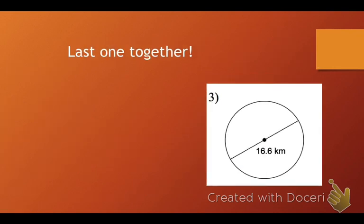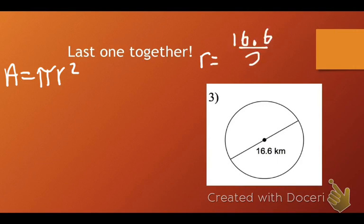We're going to do one more. So, again, area of a circle. A equals pi R squared. Again, we're given the entire length. So, we're given the diameter. So, to find the radius, we need to do the diameter. So, 16.6 divided by 2. And, that's going to give us 8.3. So, the radius this time is 8.3. So, A equals pi times 8.3 squared.